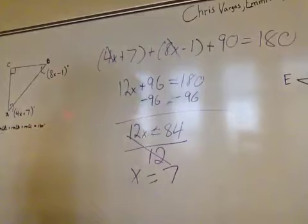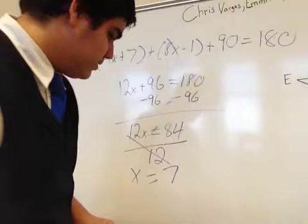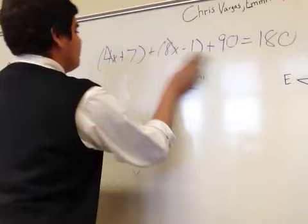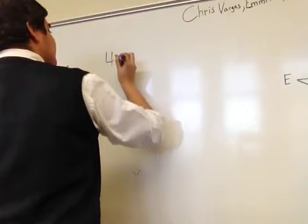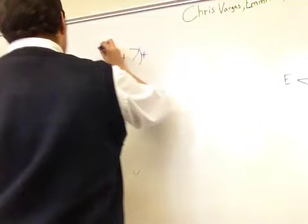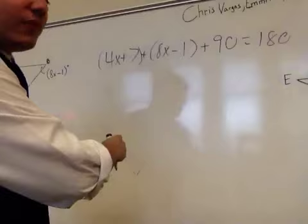Now, let's see what happens when we put 7 in the equation, so that it all adds up to 180. Let me just erase all this. Get a fresh start. Now, 4x plus 7 plus 8x minus 1 plus 90 equals 180. What we want to do is, since we found out that x equals 7, we have to substitute it for each one of these.